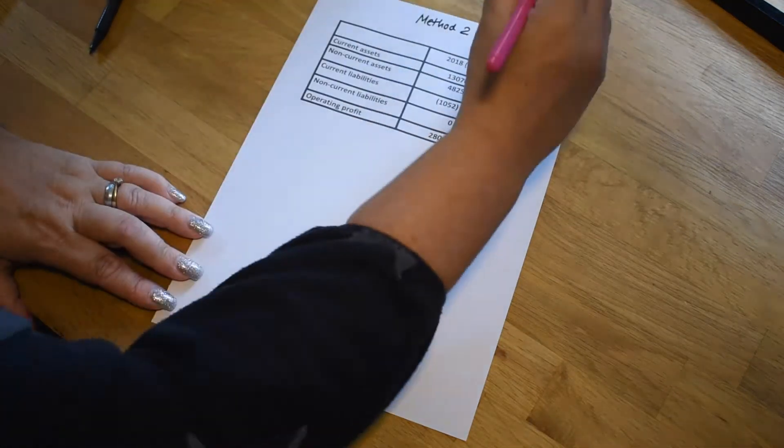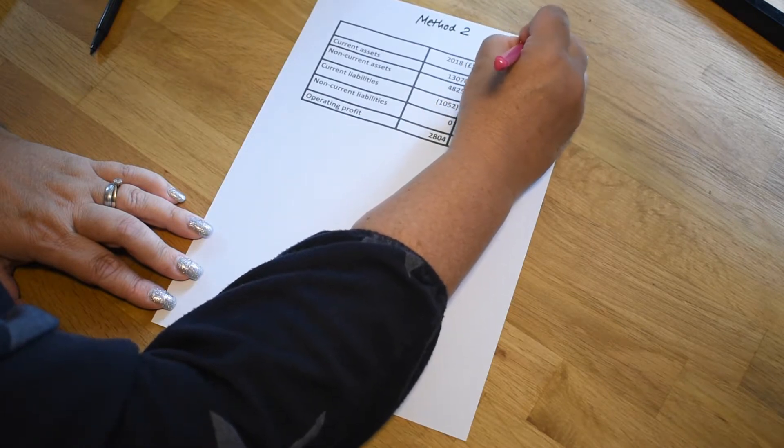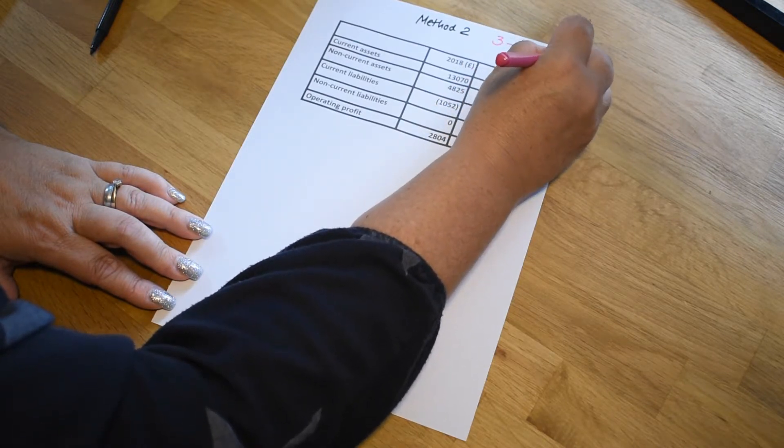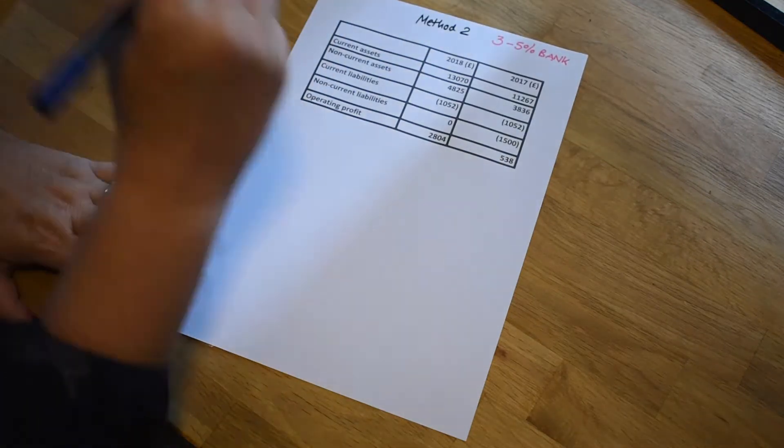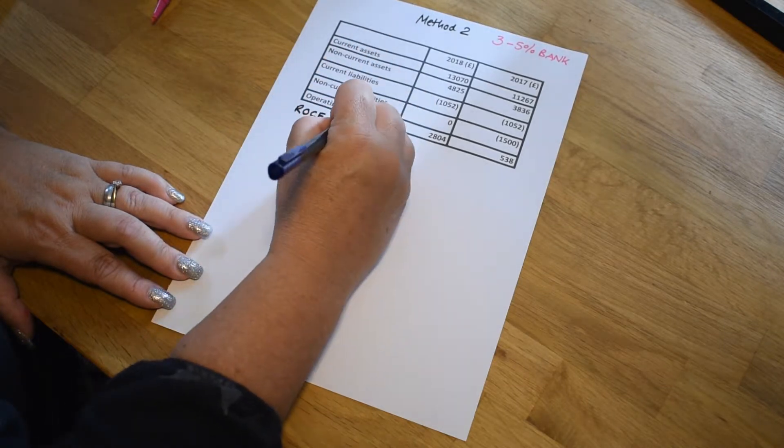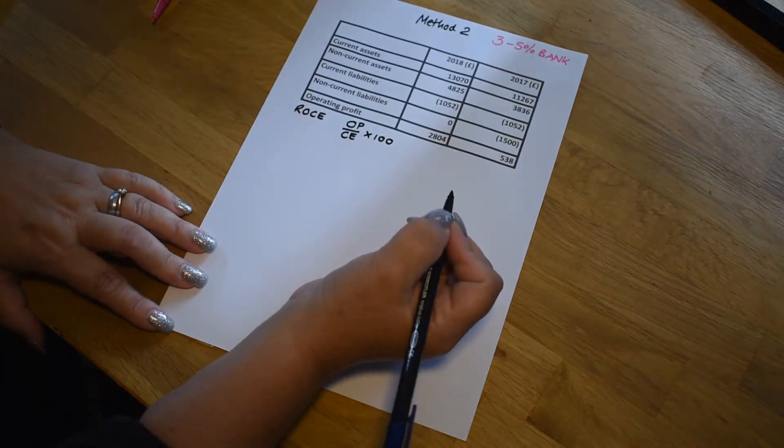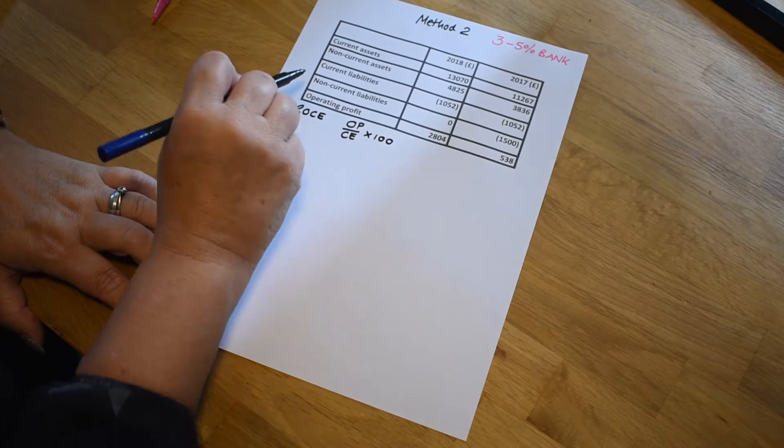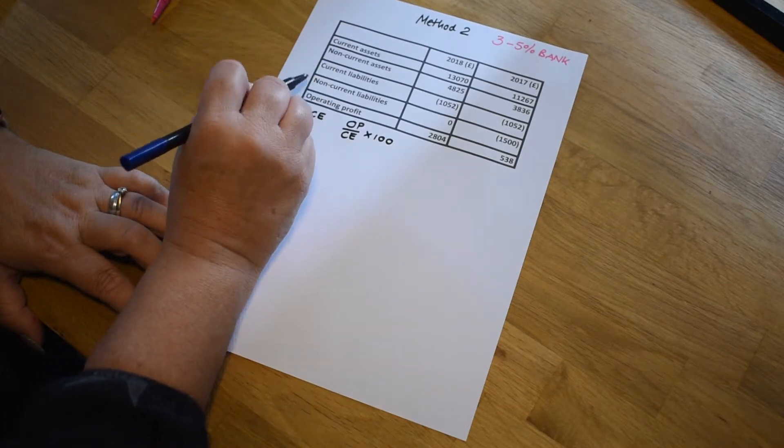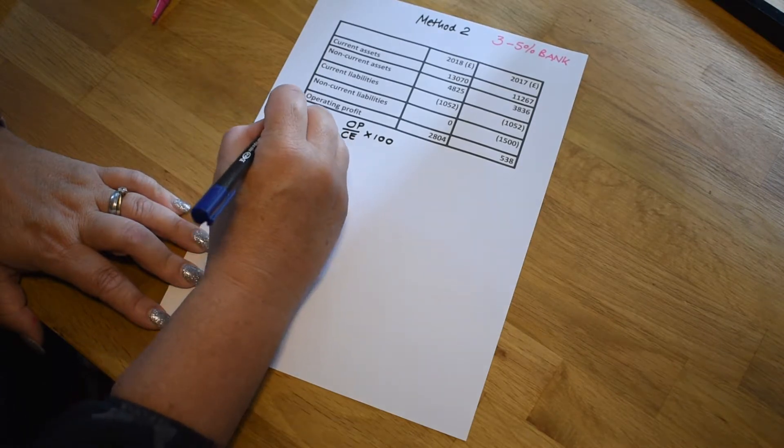So method two. Let's remind ourselves that if we're going to invest some money, we might get between 3% and 5% in a bank savings account. So we'll pop that up there so we know what we're going to compare it against. Our return on capital employed formula stays the same. It's operating profit over capital employed multiplied by 100 to give us the percentage. But in this case, you can see there's no total equity figure. So we're unable to use the formula that we did in method one. So we need to use a second formula.